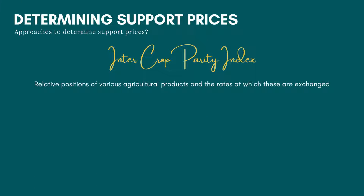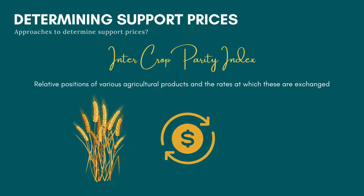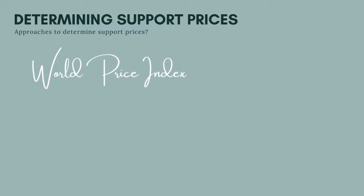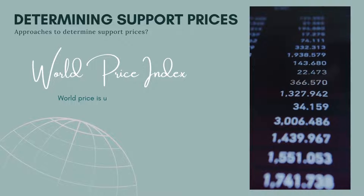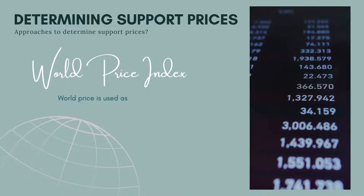The third method is referred to as the inter-crop parity index, which reflects the relative positions of various agricultural products and the rates at which these are exchanged. Different crops may compete with each other, so a parity between their prices is maintained so that one crop is not preferred over another.